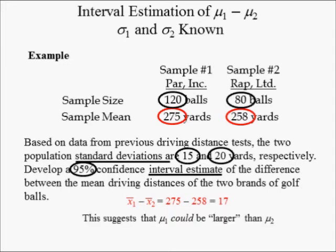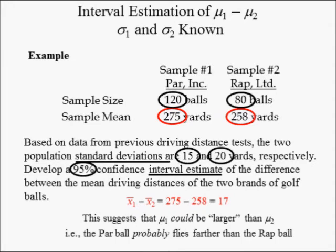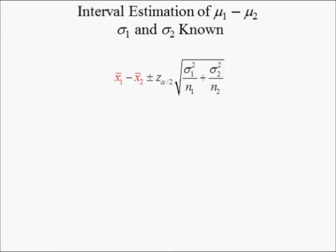This suggests that mu1 could be larger than mu2 — that is, the PAR ball probably flies farther than the RAP ball. Note, this is only anecdotal evidence; we don't know if this difference is statistically significant. Next, substitute the sample means, population standard deviations, sample sizes, and the significance level into the interval estimate.